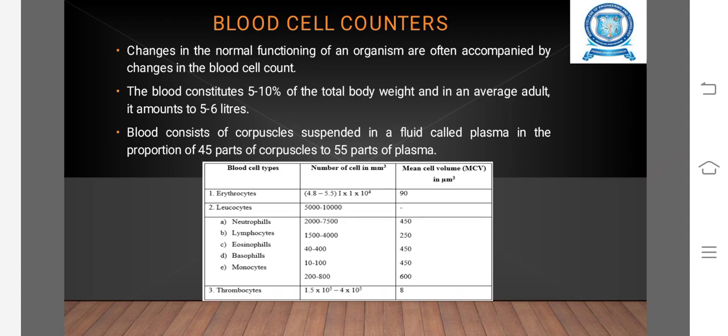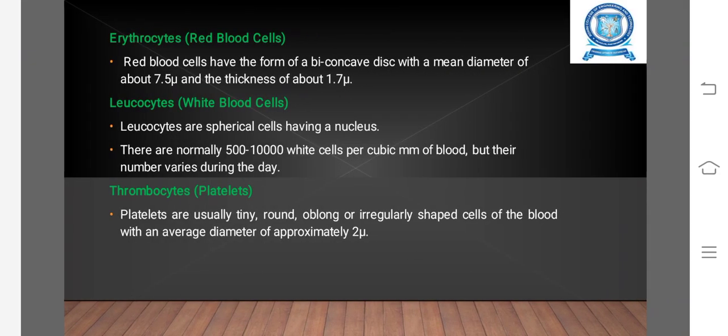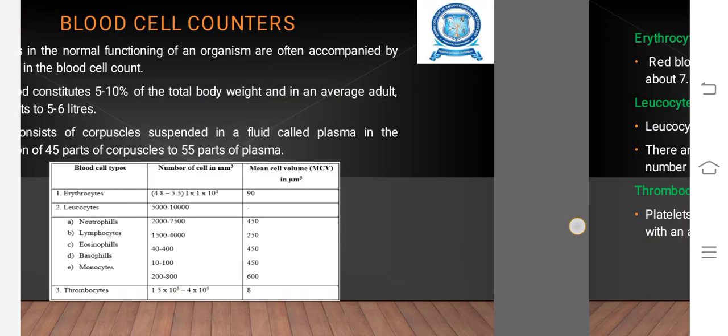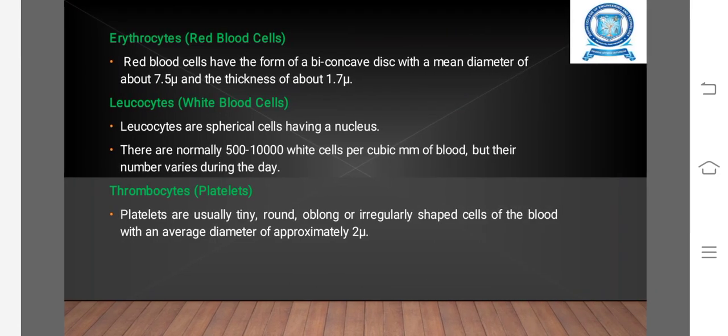Blood cell types: erythrocytes, leukocytes, and thrombocytes. Erythrocytes (red blood cells) have the form of a biconcave disc with a mean diameter of about 7.5 micrometers and thickness of about 1.7 micrometers.